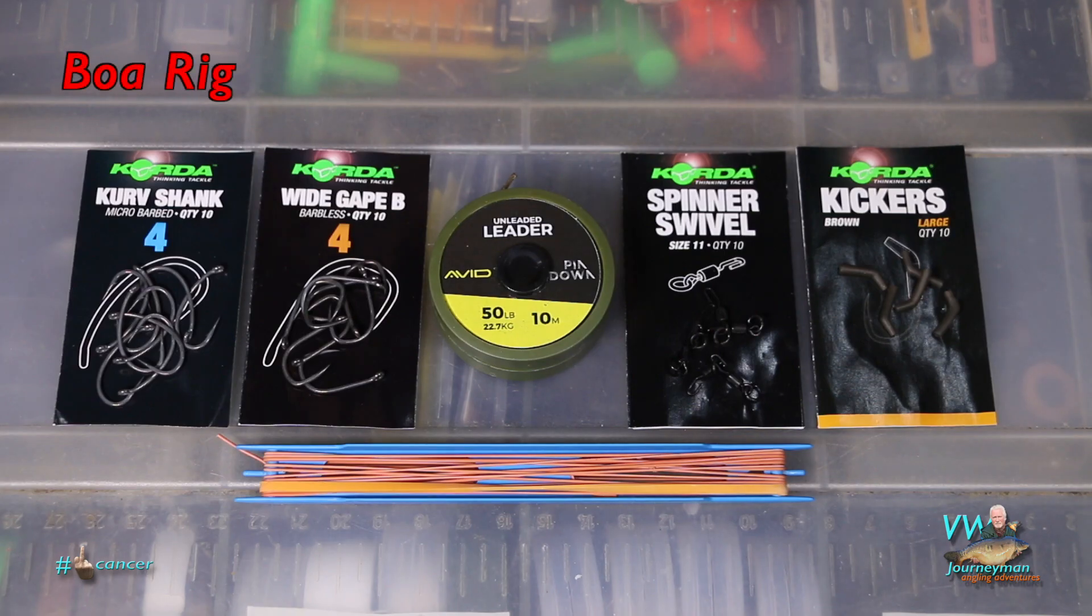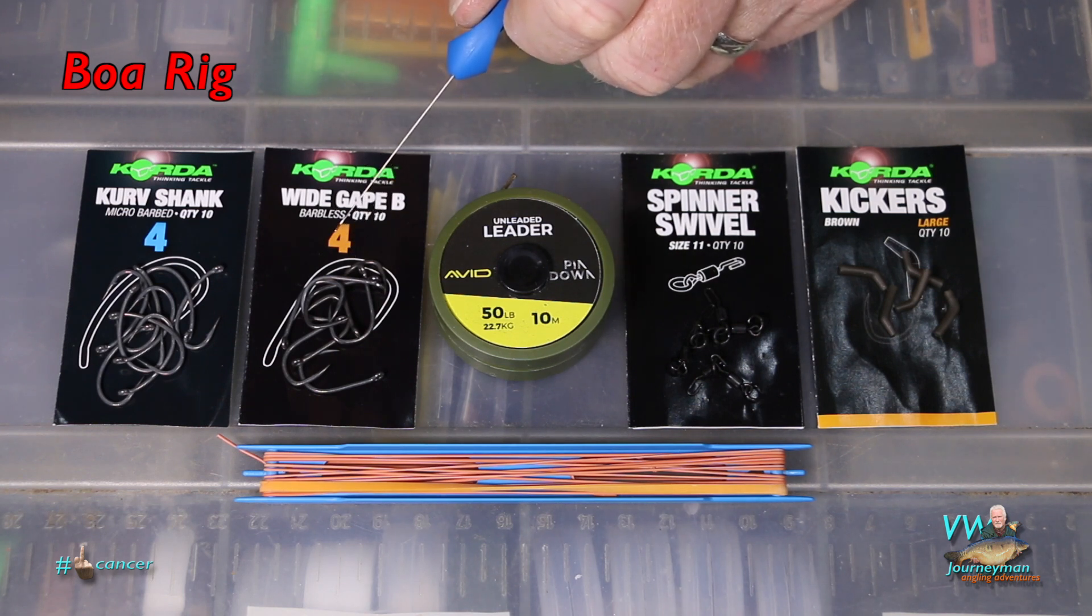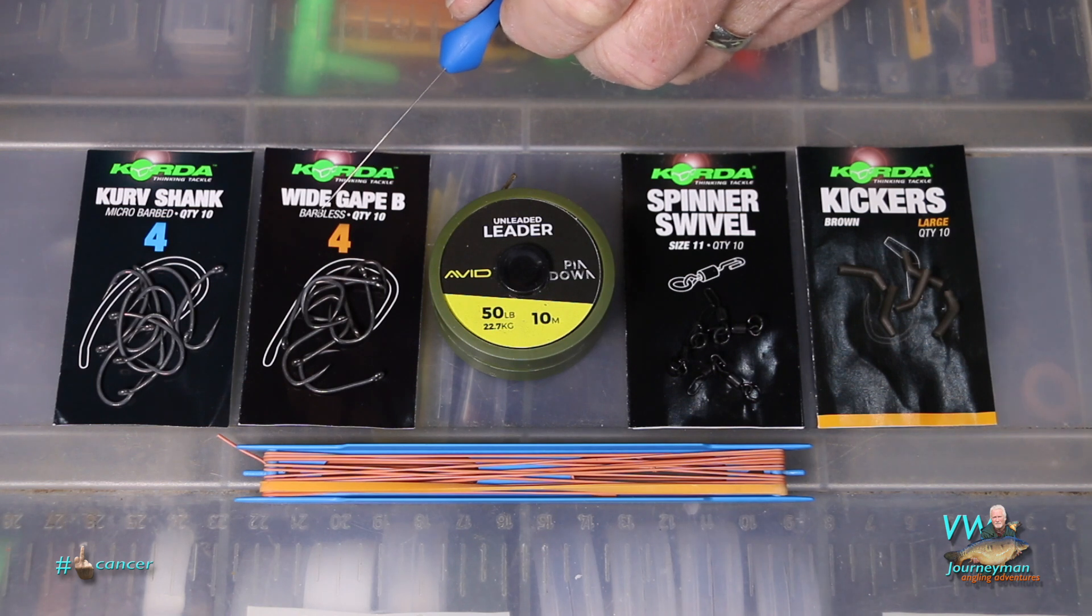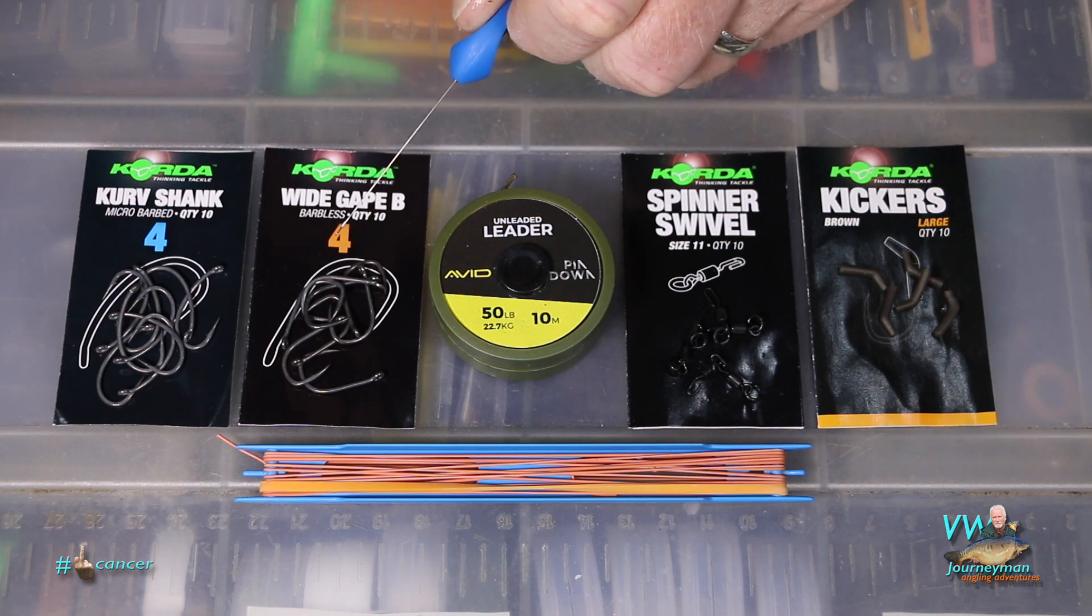So here we go. These are the components I use to tie the rig. I use a beak point hook if it's barbless, rightly or wrongly the thinking being if it's got a curve to go into the lip then it's got a curve to come out again, as opposed to a straight point which can just pull in and pull out.